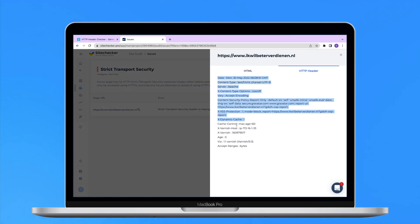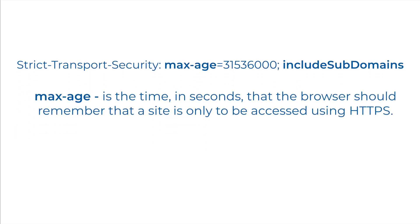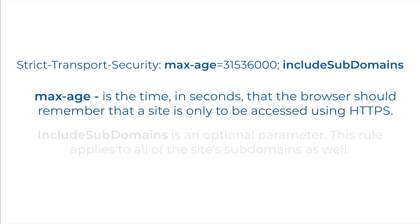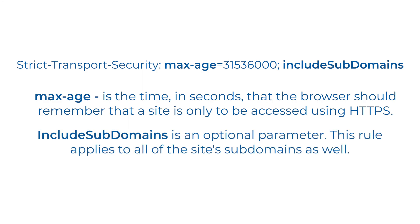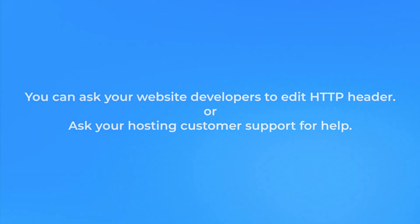In order to fix the issue, add the following directive to the HTTP header. Max-age is the time in seconds that the browser should remember that a site should only be accessed using the secured version. Include subdomains is an optional parameter — this rule applies to all the site's subdomains as well. If you are not sure where to edit the header, it's better to ask your website developers to add the mentioned directives.